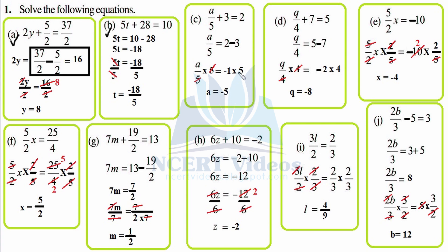Part d: q over 4 plus 7 equals 5. So q over 4 as it is, transposing 7 towards the right-hand side gives 5 minus 7, which is minus 2. Now to get rid of the denominator 4, we multiply by 4 on both sides. 4 cancels, so q equals minus 8.